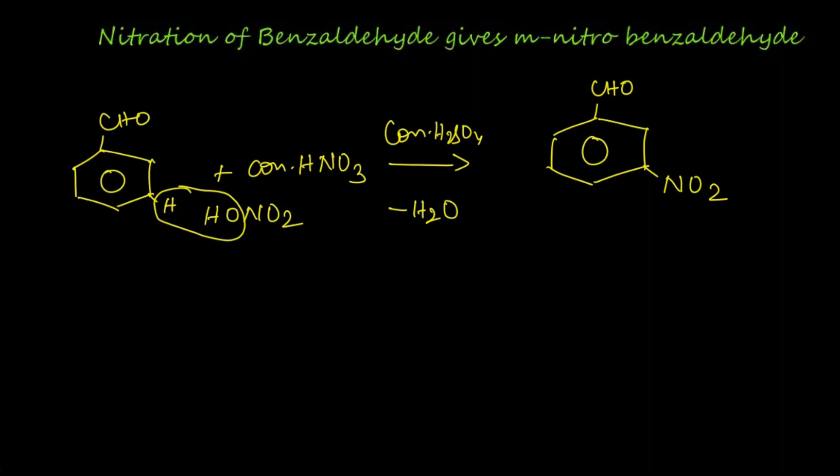Let's write the name for the structures. This is benzaldehyde reacts with the nitration mixture, which is a mixture of concentrated nitric acid and concentrated sulfuric acid. Here in the meta position there will be a hydrogen. This hydrogen and this OH from nitric acid will get eliminated as a water molecule, so we get meta-nitrobenzaldehyde.